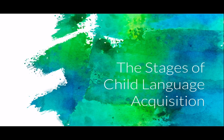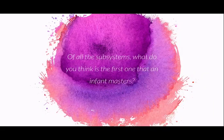Today we're going to go through the stages of child language acquisition. This is the start of the second area of study of unit one, thinking about how children learn language. Pause here and have a quick brainstorm: of all the six subsystems, which one do you think is the first one that an infant masters? Once you've written something down, come back to the video and check if you're right.